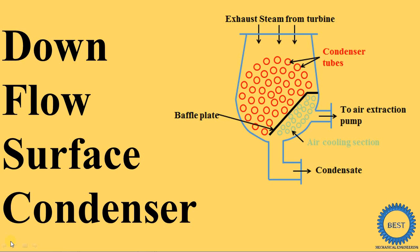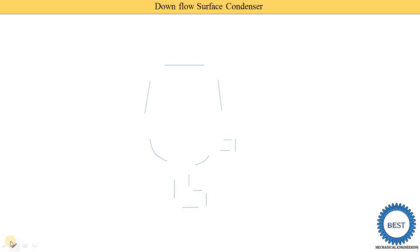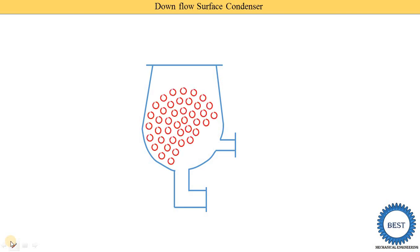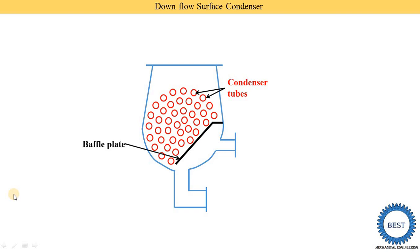Now we understand the construction of the downflow surface condenser. This is the outer part. Inside the condenser there are a number of tubes, and these tubes are divided into two parts. The red color tubes have larger diameters. Another section is created below, separated by baffle plates. Below the baffle plates there are more tubes but with a smaller diameter.